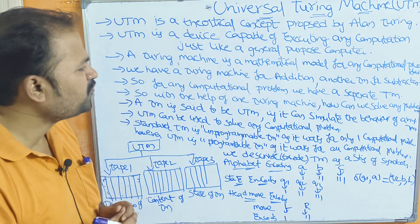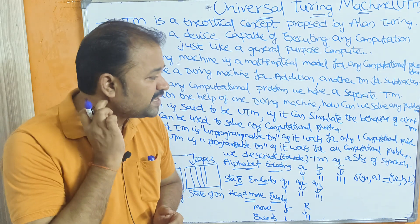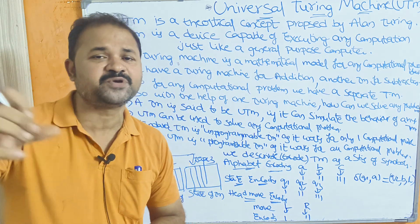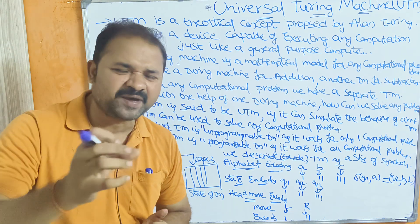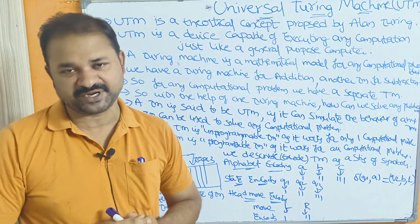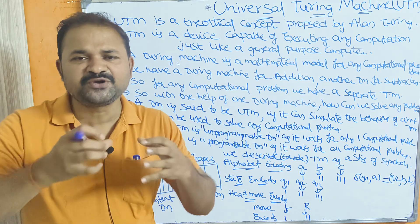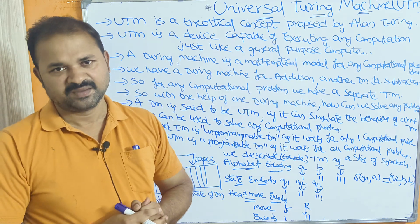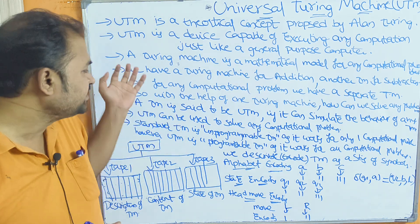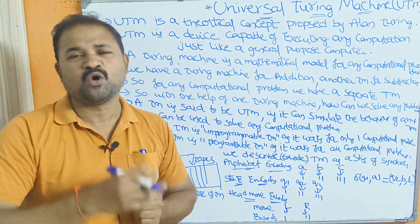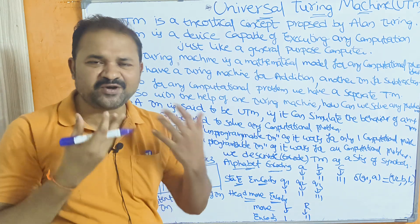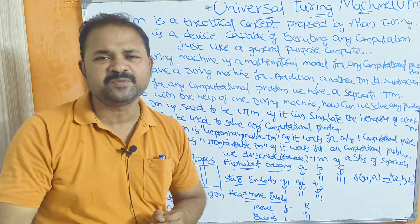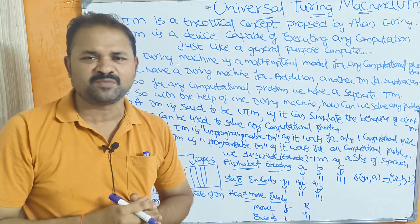So with the help of one Turing Machine, how can we solve any problem? Universal Turing Machine is just like a computer — it can perform any operation. But the problem is, if we want to solve three problems, each problem has its own Turing Machine. The question is: with the help of only one Turing Machine, how can we perform addition, subtraction, multiplication, and division all together?